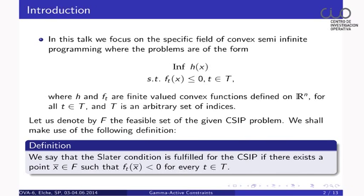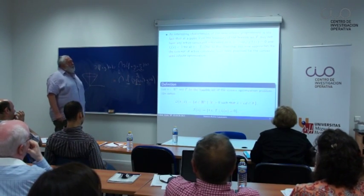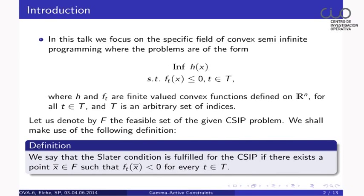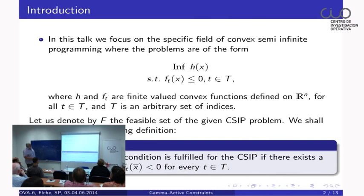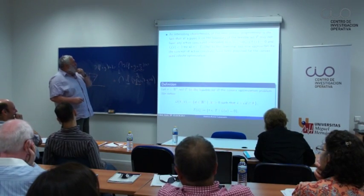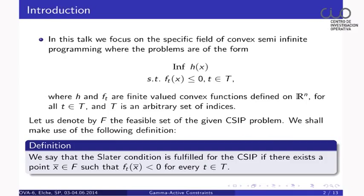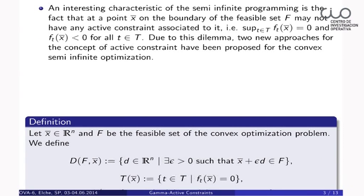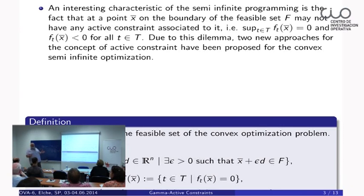One of the interesting characteristics of semi-infinite programming is that at a point x-bar on the boundary of the feasible set, even in the linear semi-infinite case, there may not be any active constraint — meaning the supremum is zero but f_t of x-bar is strictly less than zero for every t. This can appear throughout the entire boundary, with no active constraints anywhere. For using constraint qualification approaches, this is very bad news, and because of this we need to invent something similar to active constraints.